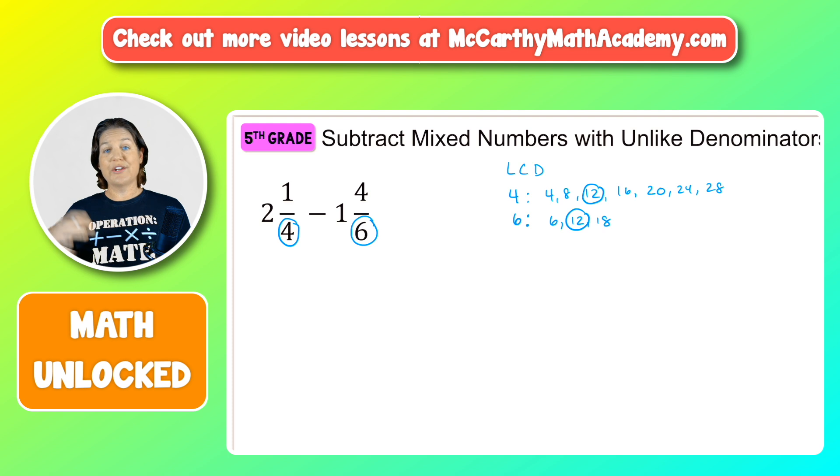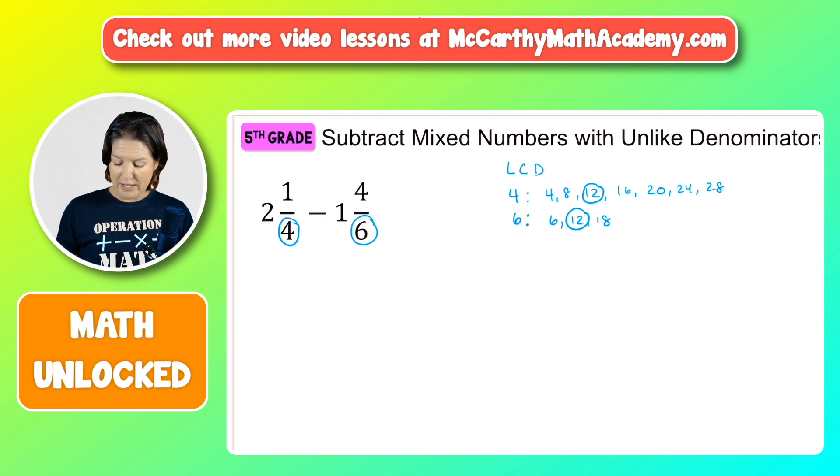So what we can do now is we can rewrite those fractions. So we have 2 and something 12ths minus 1 and something 12ths. Now I know it looks like we're creating new fractions. We're actually creating equivalent fractions here. That way we can more easily subtract them.